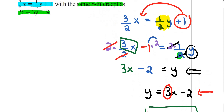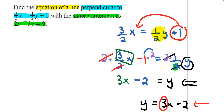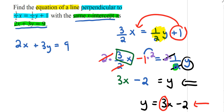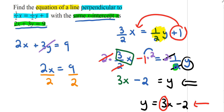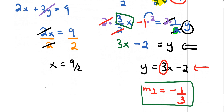Going back to the original problem: it has the same x-intercept as another equation, so the y variable goes to 0. That gives 2x equals 9, and dividing both sides by 2, x equals 9 over 2. So the x-intercept point is 9 over 2 comma 0.